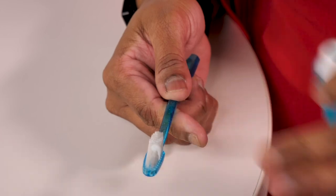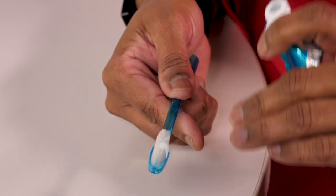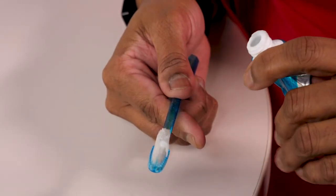It's not the amount of toothpaste, it's about the bristles of the toothbrush reaching all the surfaces of the teeth. Make sure you brush all the surfaces of the teeth and make sure your child spits out the toothpaste and doesn't swallow it.